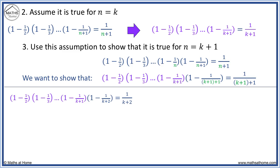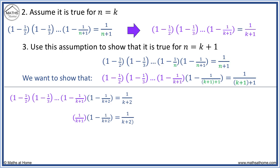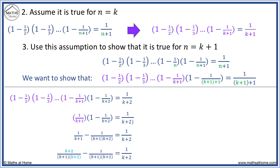We simplify so the final bracket becomes 1 minus 1 over k plus 2. The bit in purple is the same as our assumption from step 2, so we substitute this result in. We then expand the brackets, multiply the first term by k plus 2 on top and bottom (shown in blue) to get a common denominator, and combine the fractions. The numerator simplifies, and dividing numerator and denominator by k plus 1 gives 1 over k plus 2 equals 1 over k plus 2.